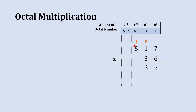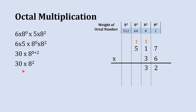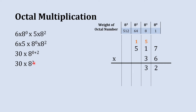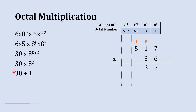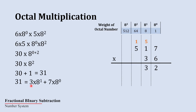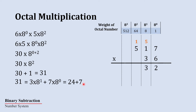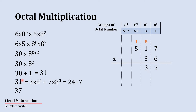Now we will multiply this 6 with the next digit of the multiplicand. Here, 6 which has a weight of 8 raise to 0 gets multiplied with 5 which has a weight of 8 raise to 2. We get their multiplication as 30, and the multiplication of their weights is 8 raise to 2. After this multiplication, we have 1 as carry, so 30 plus 1 gives us 31. This 31 is decimal, so we convert it to octal: 3 into 8 raise to 1 plus 7 into 8 raise to 0 gives 24 plus 7 equals 31, so the octal equivalent is 37.